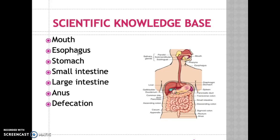The sphincter muscle prevents food or air from entering the throat. The main function of the stomach is storage, mixing, and regulating of food entering into the small intestine. In the stomach you will also find HCL, hydrochloric acid. The small intestine facilitates digestion and absorption.